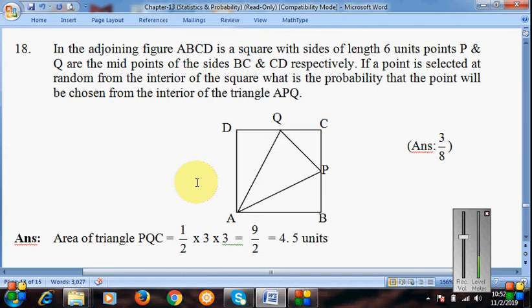Now look for the question. In the adjoining figure ABCD is a square with side of length 6 units. Points P and Q are the midpoints of the sides BC and CD respectively.